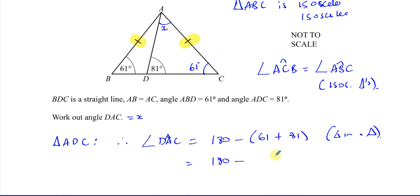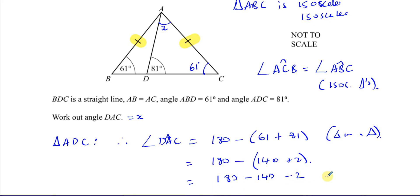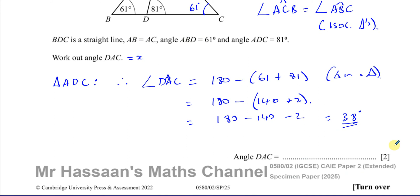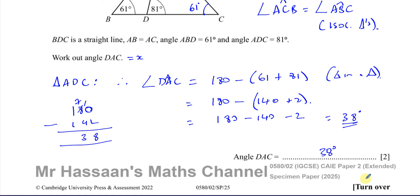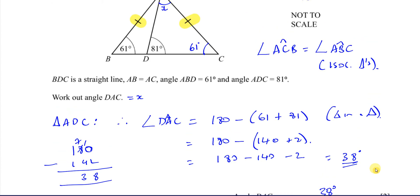So that gives us 180 minus 142. This is where the challenge is for some students who aren't confident with mental arithmetic. One approach: 180 minus 140 minus 2 gives 40 minus 2, which is 38. Or directly: 180 minus 142 — borrow from the tens, 10 minus 2 is 8, 7 minus 4 is 3, giving 38 degrees. There are different mental arithmetic methods you can use.